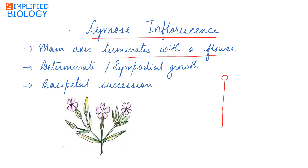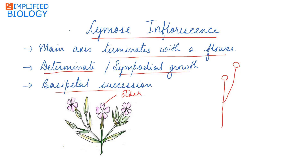This means determinate growth is seen. When the growth of the main axis gets restricted, a lateral branch then develops which grows further. Such type of growth is known as sympodial growth, and in this case flowers develop in basipetal succession — the central flower is the older one while the lateral ones that develop later are the younger ones.